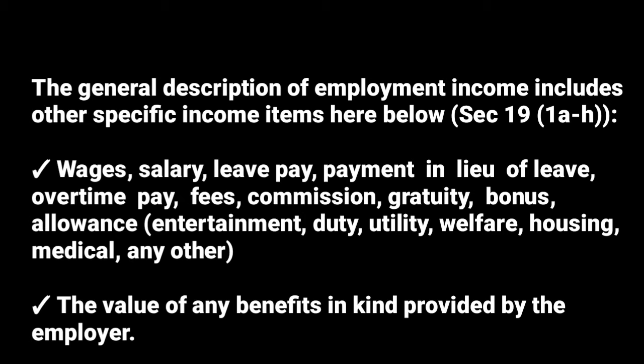The second composition of employment income is the value of any benefit granted. If they give you any benefit from being employed — something you receive because you are doing that job, which you wouldn't have gotten otherwise — it is also considered employment income. Any benefit in kind provided by the employer: for example, instead of giving you a housing allowance, they give you a house; instead of giving you a transport allowance, they give you a car. So any benefit in kind provided by the employer is regarded as employment income.